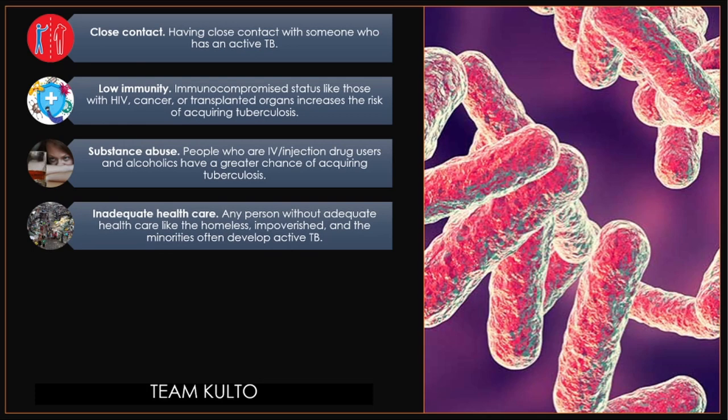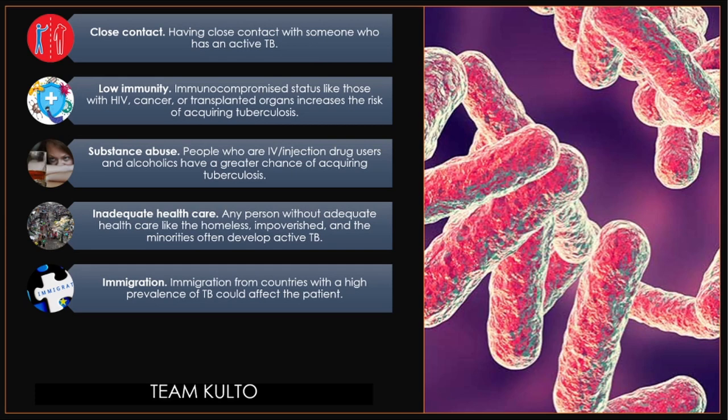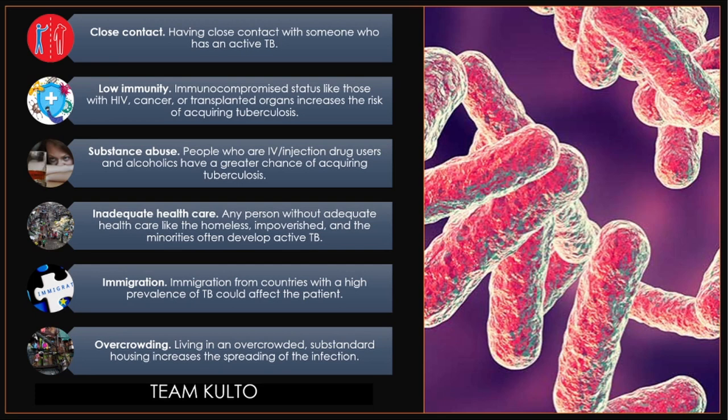Immigration from countries with high prevalence of TB can also affect the patient. Overcrowding — a good example is living in slum areas. Living in overcrowded, substandard housing increases the spreading of the infection. Remember that PTB is transmitted through airborne droplets, so in crowded, poorly ventilated areas, there is a much higher chance of transmission.